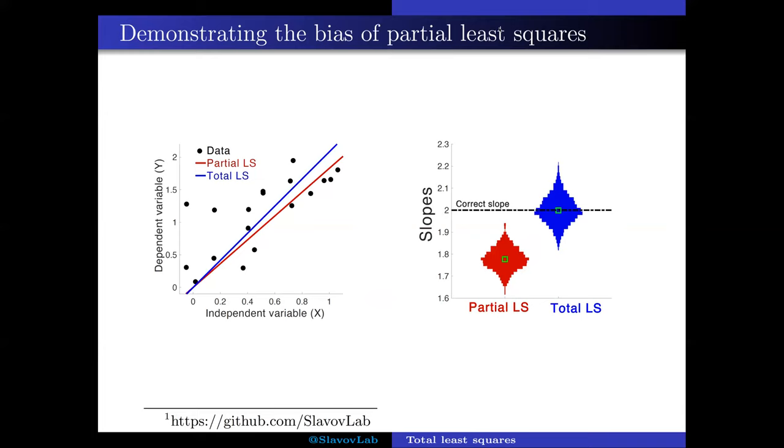And as you can see, the blue distribution is centered exactly at the correct slope of two, that's what my generative model is, that's what I'm simulating, while the red distribution gives me systematically smaller slopes.